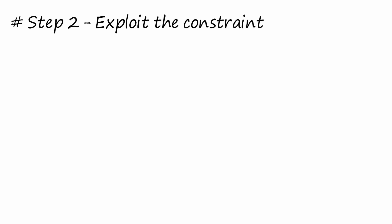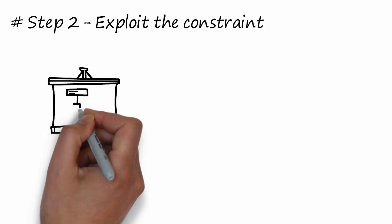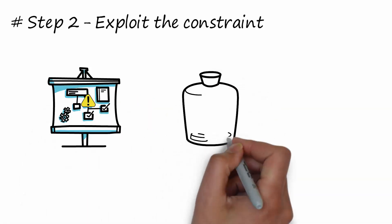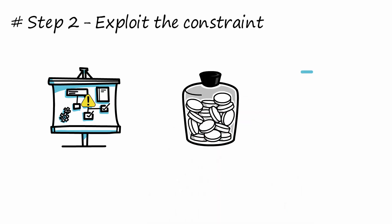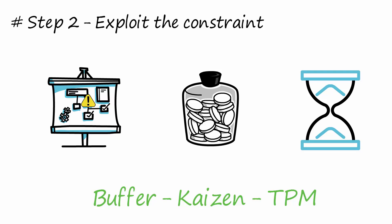The constraint is the point of the flow that regulates the output. It is the most precious point. Therefore, in this step all actions must be put in place in order not to lose even one minute of production on the constraint. You can put a buffer, you can launch a quality guide, and you can improve maintenance with the TPM.